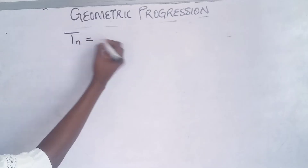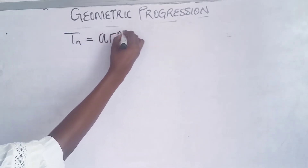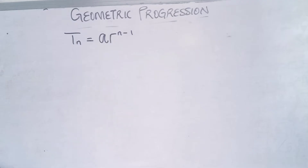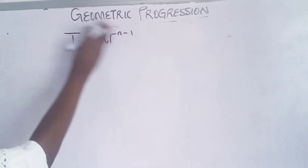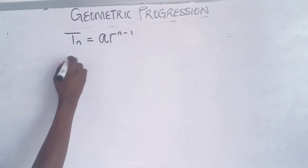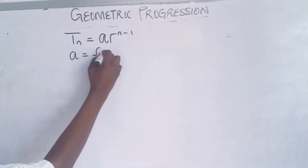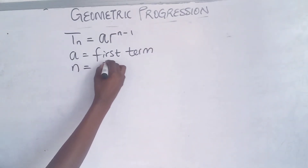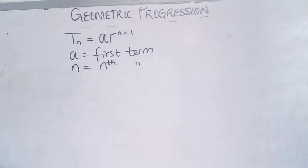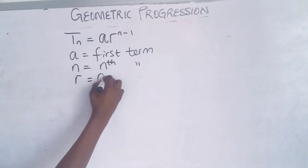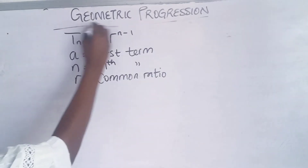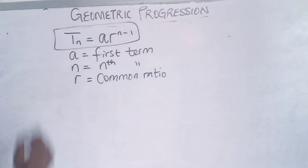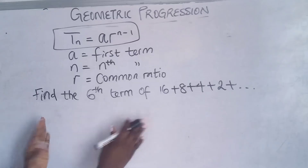For any nth term, the formula is a·r^(n-1). You always have to know the formula so that when you are given a question you can solve. Here, 'a' is the first term of the sequence or series, 'n' is your nth term — whatever it is you have been asked to find — and 'r' is known as the common ratio. This is the formula for finding the nth term of a geometric progression.